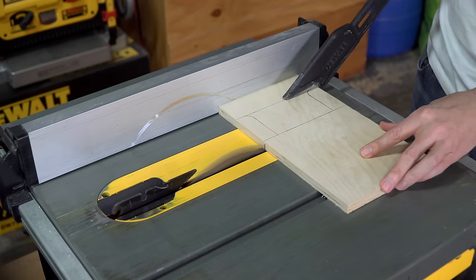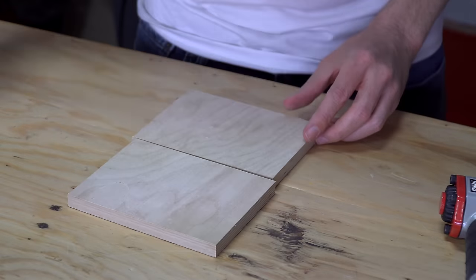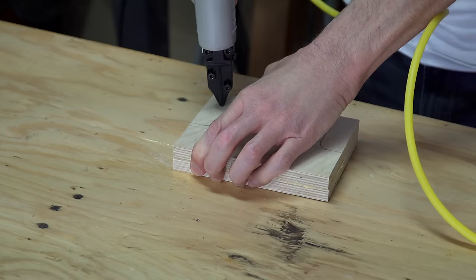Making the toolbar was a pretty similar process to making the headstock and the tailstock. Basically, I laminated a couple pieces of wood, and then cut the shape I wanted it to have out with a jigsaw.